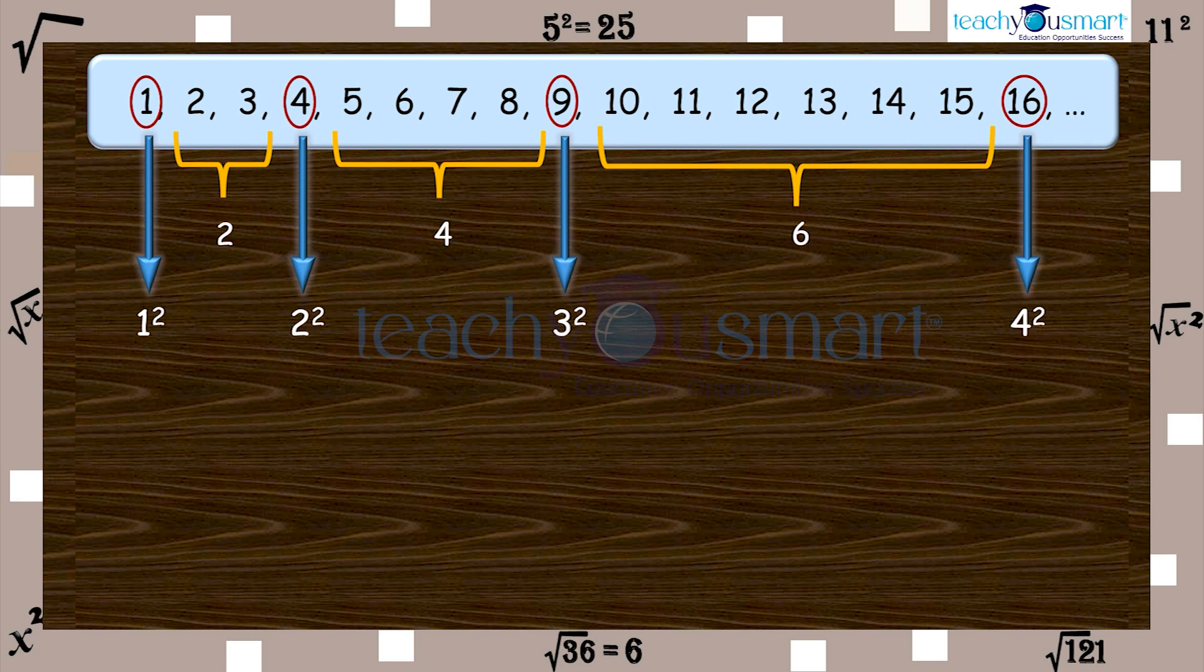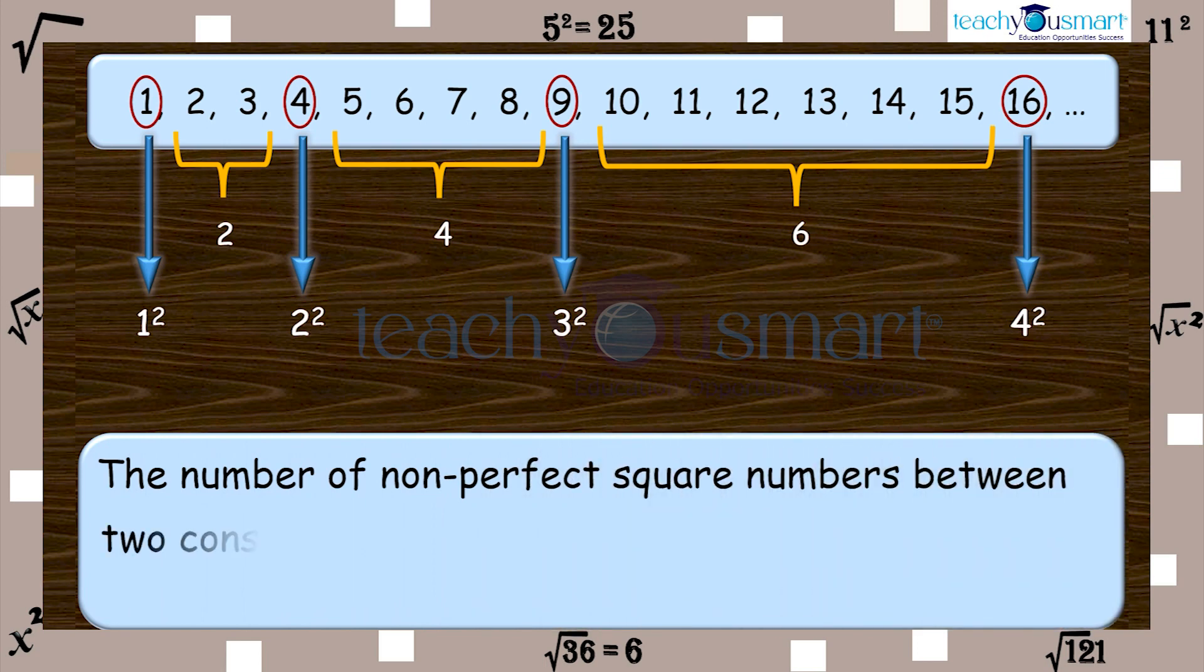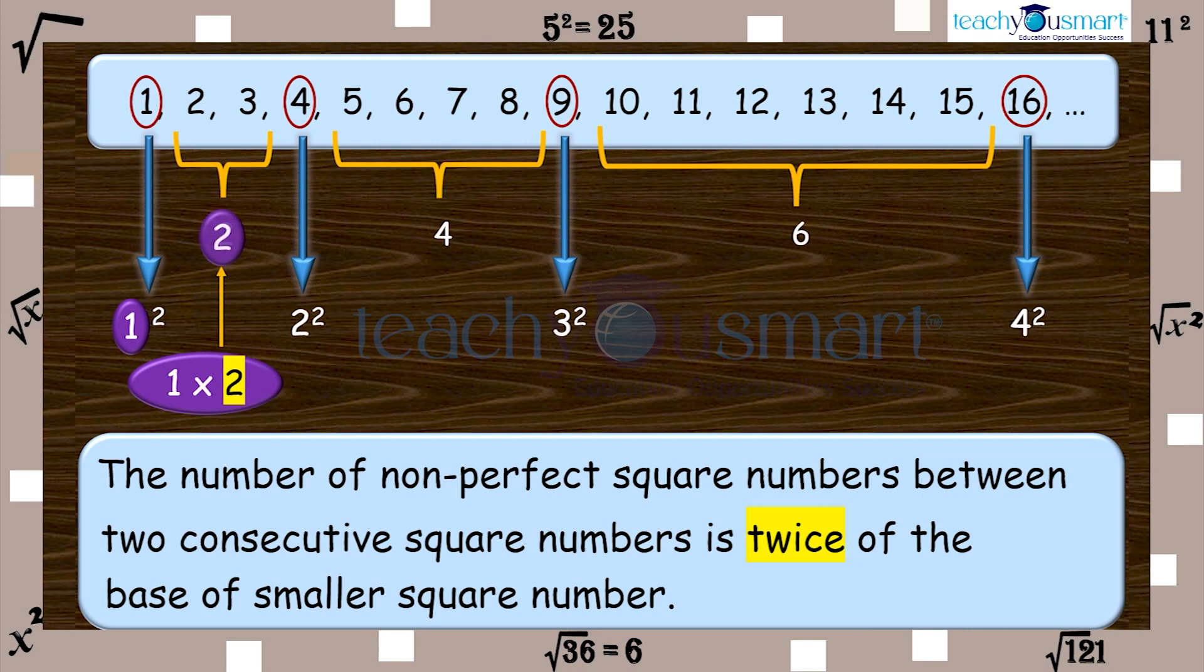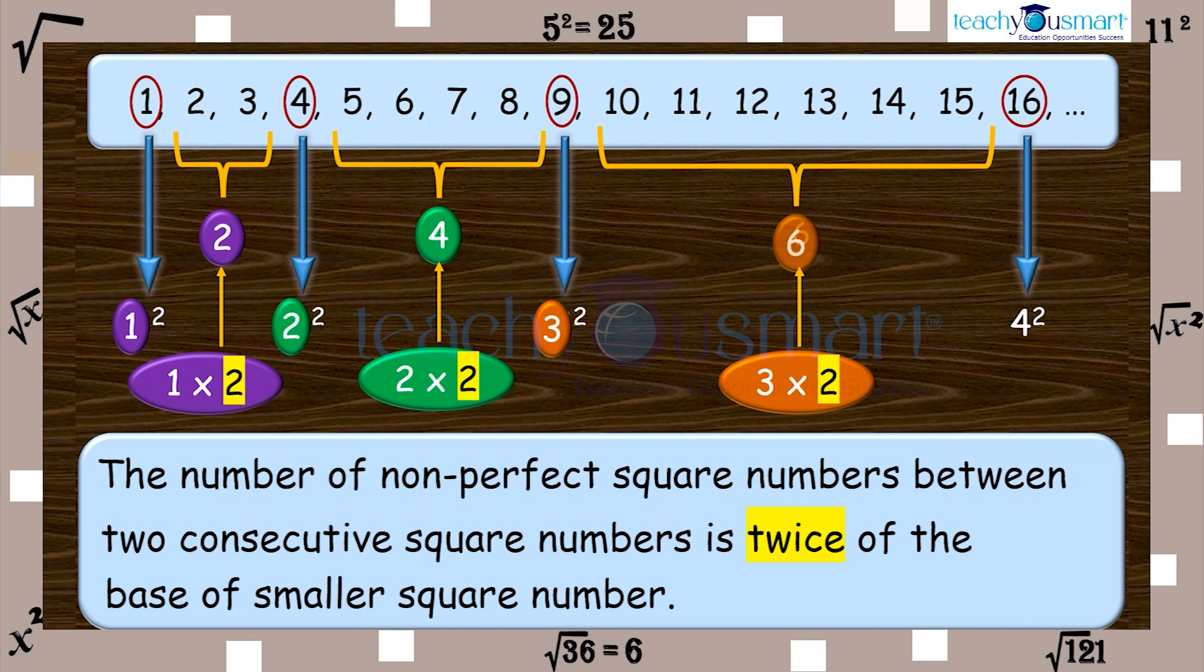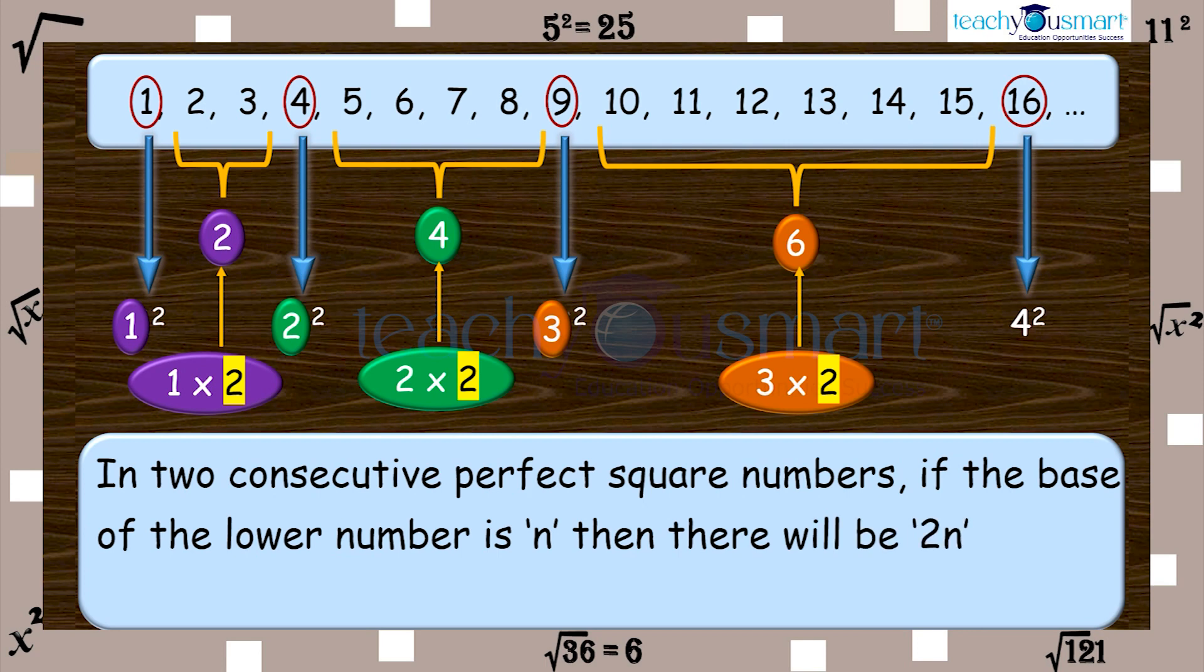Now, can you find the number of non-perfect square numbers between four square and five square? Observe the pattern once again. You can see that the number of non-perfect square numbers between two consecutive square numbers is twice the base of the smaller square number. That is, in two consecutive perfect square numbers, if the base of the lower number is n, then there will be 2n non-perfect square numbers between them.